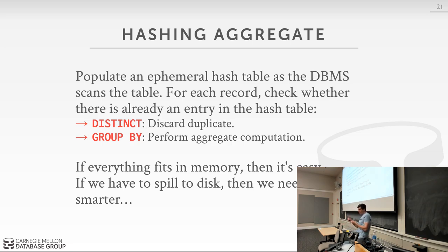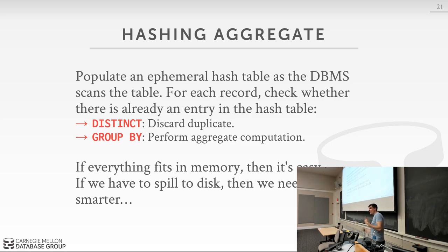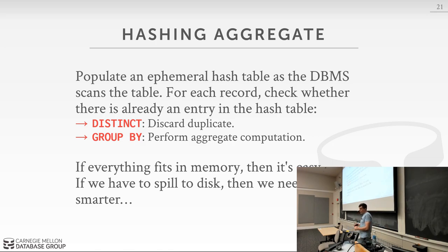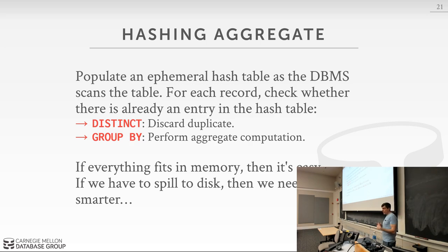We populate the hash table and, depending on the aggregation we're trying to compute, do different things with values in the buckets. For DISTINCT, if we see a duplicate we just discard it. For GROUP BY with an aggregation function, we summarize the value on the fly. Just like with sorting, if everything fits in memory we can use any in-memory hash table — linear probe, extendable, cuckoo, whatever. But if the dataset doesn't fit in memory, we need to be smarter, just like in the sorting case.